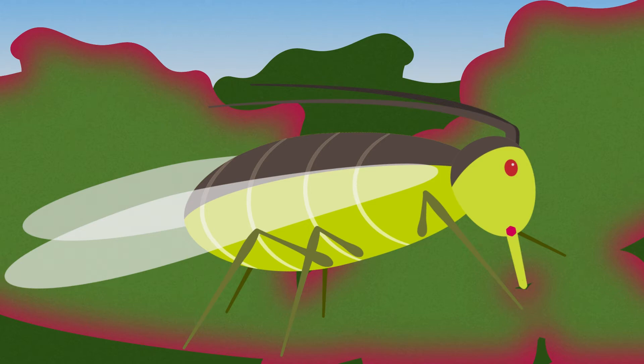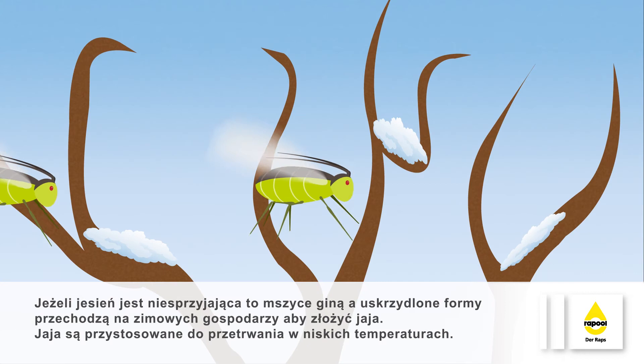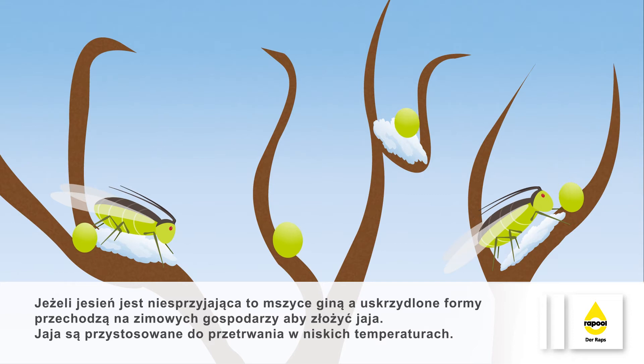If the autumn is harsh, the unwinged aphids die, while the winged aphids switch to their winter hosts to lay their eggs. The eggs are able to survive well in low temperatures. The aphids that hatch in spring are free of the virus and do not colonise the rapeseed stocks until late spring.